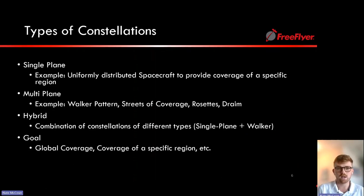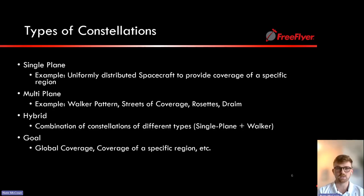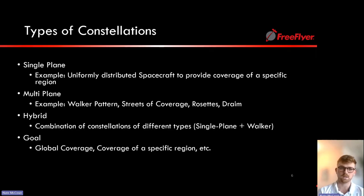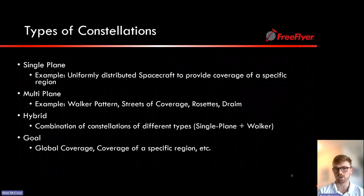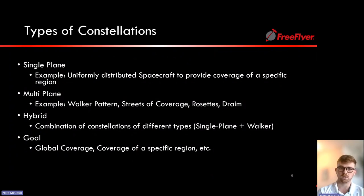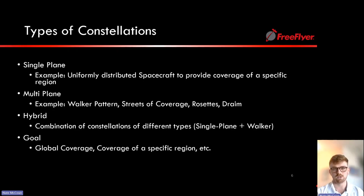There are many different types of constellations. Single-plane constellations include uniformly distributed spacecraft for coverage of a specific region. Multi-plane options include the Walker pattern, streets of coverage, rosettes or drain constellations, and many others. A hybrid combines different constellation types, such as single-plane with a Walker or streets of coverage. Finally, the goal matters: is it global coverage, coverage of a specific region, optimizing inter-satellite linking, or other objectives?